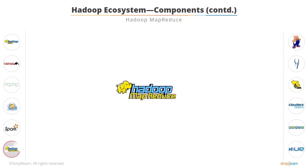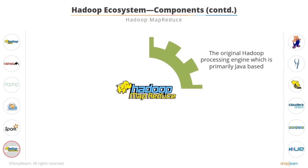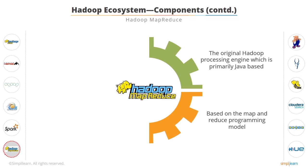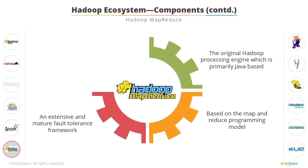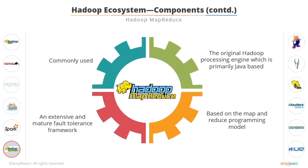Hadoop MapReduce is the other framework that processes data. It is the original Hadoop processing engine, which is primarily Java-based. It's based on the Map and Reduce programming model. Many tools, such as Hive and Pig, are built on the MapReduce model. It has extensive and mature fault tolerance built into the framework. It is still very commonly used, but is losing ground to Spark.